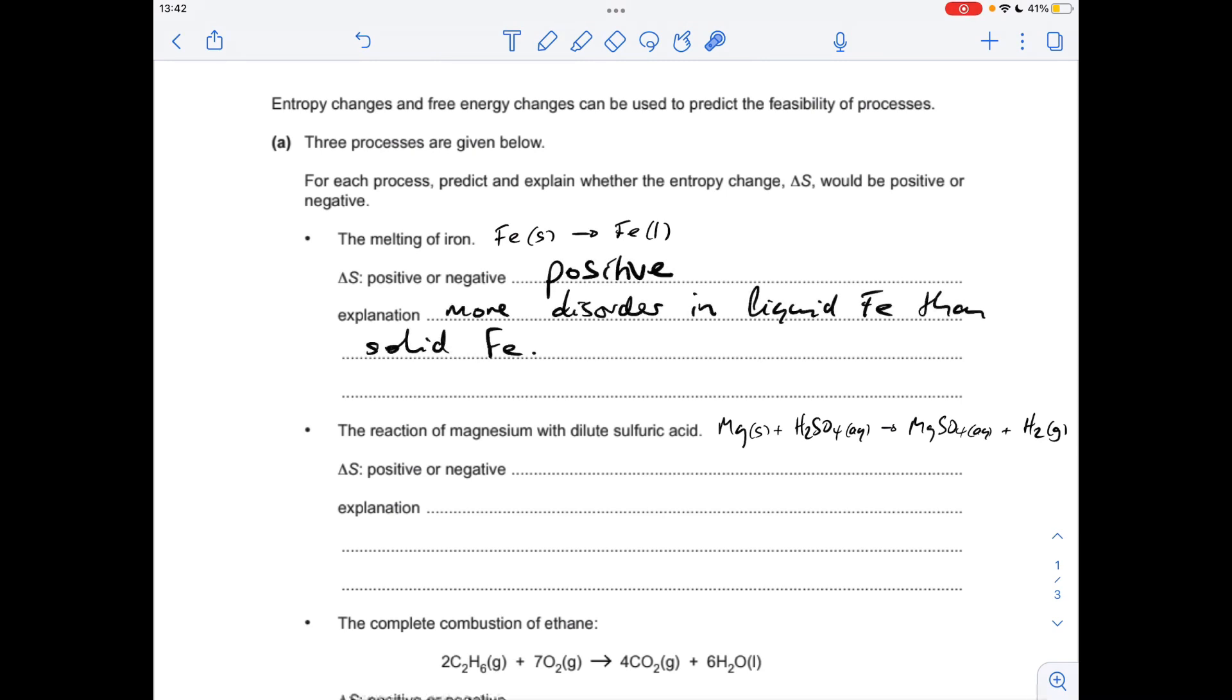Next one, the reaction of magnesium with diluted sulfuric acid. Well, the key thing here is it's producing a gas. Gases have a large amount of disorder, high entropy, and so therefore the entropy change is positive again.